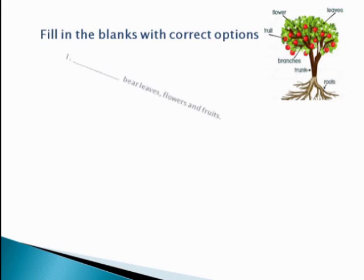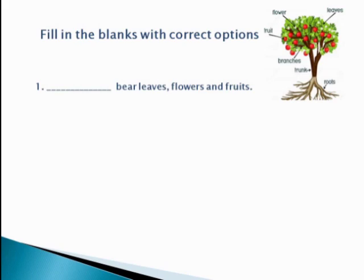Here is blank number 1: dash, pear, leaves, flowers and fruits. Do you remember the parts of a tree? Let's have a recap. Here are the roots of a tree, here you can see a trunk, then branches, fruit, a flower and leaves that make the tree look green.